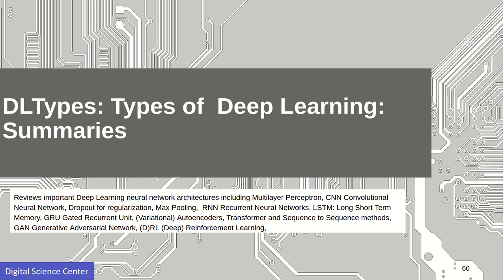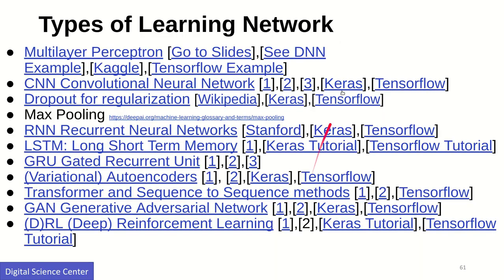Let's get started. As I explained earlier, we will be discussing multi-layer perceptron, convolutional neural networks, dropout for regularization, max pooling. These two techniques will be mostly focused on reducing some overheads in training and getting better results. We'll also be discussing some concepts on recurrent neural networks, LSTM, GRU, autoencoders, transformers, GAN, and some of the basic concepts of deep reinforcement learning as well.